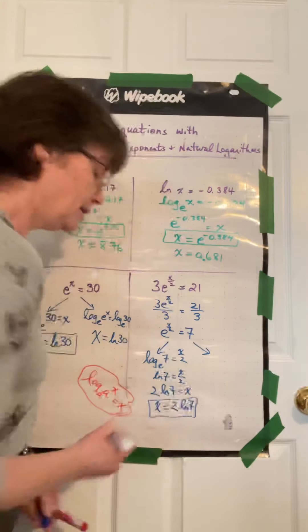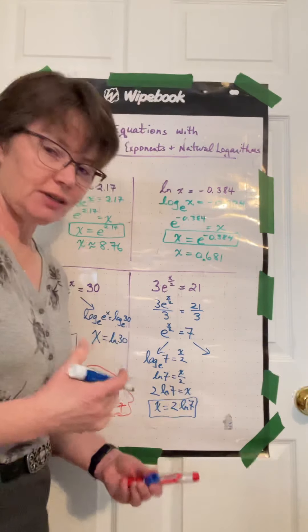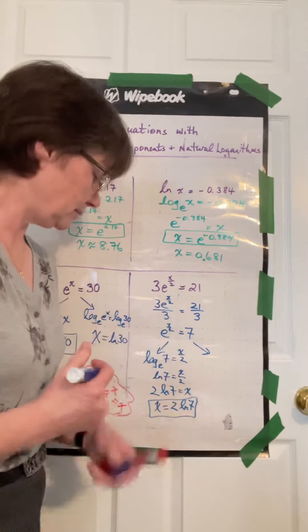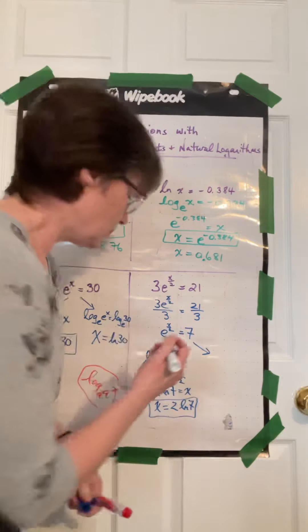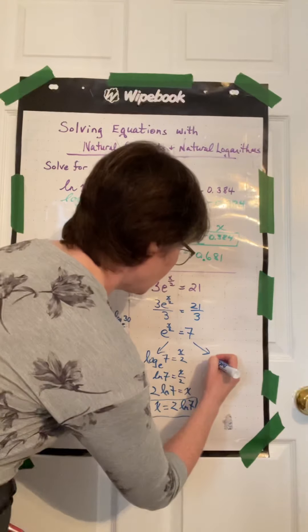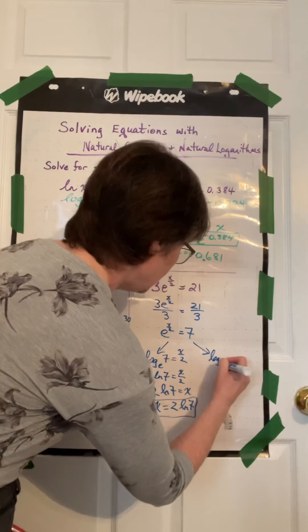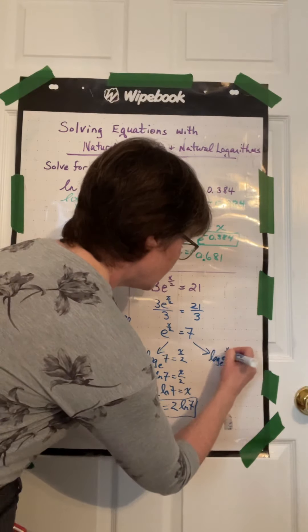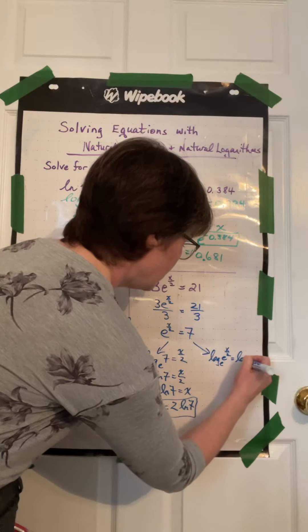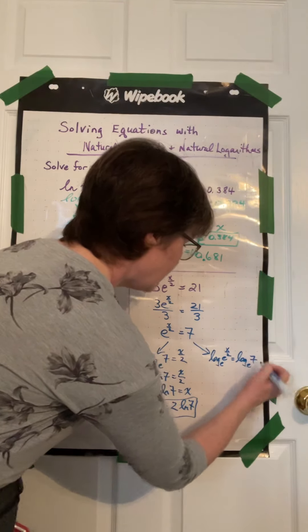Second method. By lnning both sides of the equation, log base e. Do the operation of log base e on both sides of the equation. So log base e of e to x over 2 equals log base e of 7.